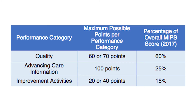Each MIPS category is assigned a maximum number of category-level performance points. For Quality, clinicians can earn up to 60 or 70 points. For Advancing Care Information, clinicians can earn up to 100 points. And for Improvement Activities, clinicians can earn up to 20 or 40 points. Your category-level performance score is determined by taking the total number of points you earned divided by the total number of points available in that category.